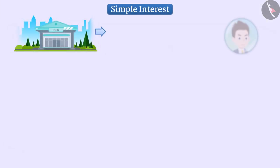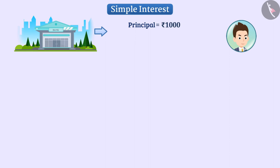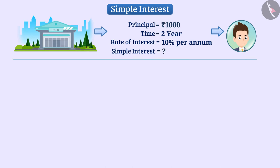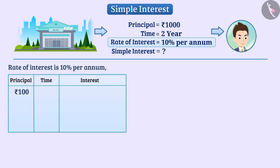Suppose we borrow Rs. 1000 from a bank at the rate of 10% per annum for 2 years. Let us find out the value of simple interest. The rate of interest is 10% per annum, that is, on Rs. 100, the interest for one year is Rs. 10.